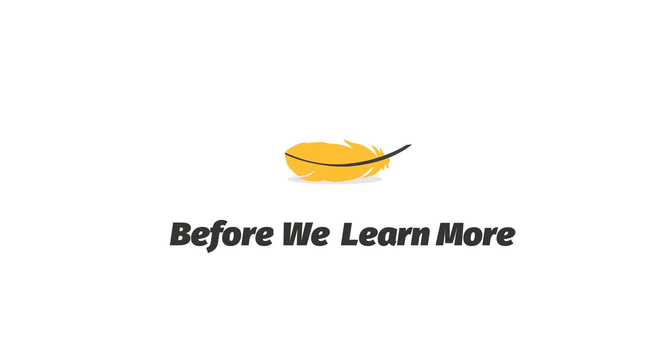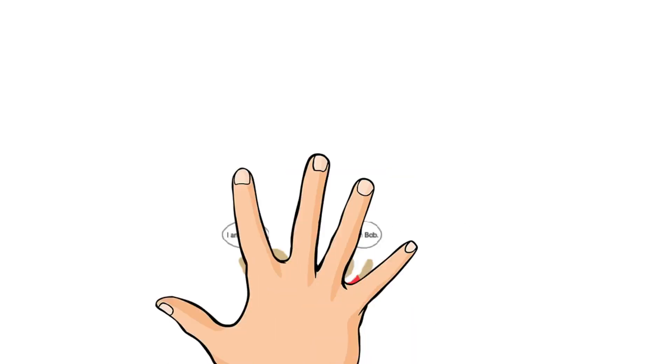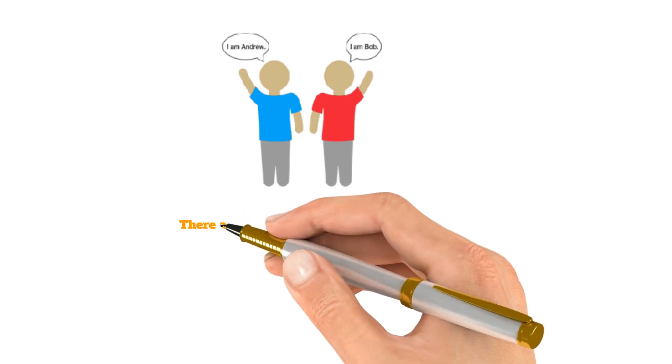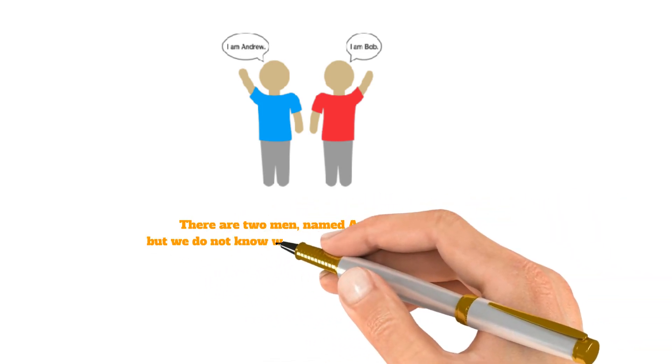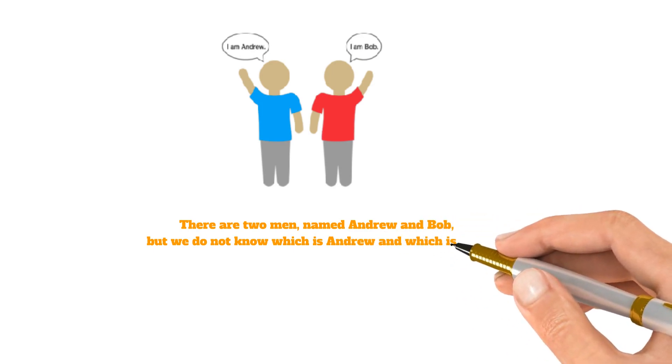Let us first look at a problem before we learn more. There are two men, one wearing a red shirt and the other wearing a blue shirt. The two men are named Andrew and Bob, but we do not know which is Andrew and which is Bob.